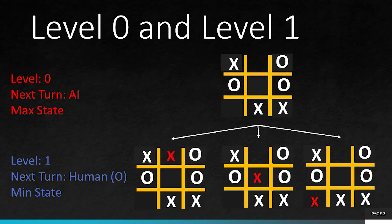Once we start playing, this is the next level. Level 0 is the start of the game and level 1 is the next level. Next turn is of AI at level 0 and AI is the maximizing player.